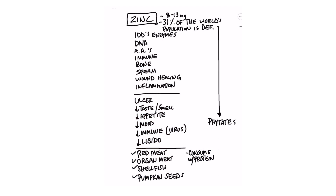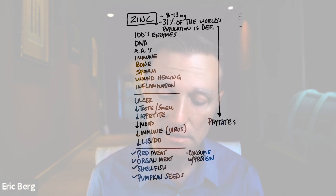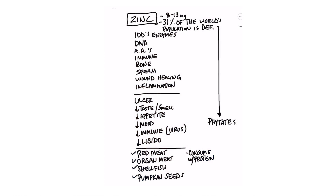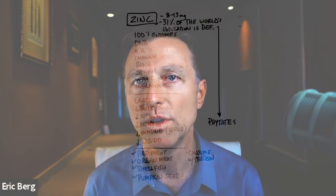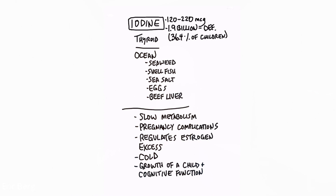Zinc deficiency can also really crash your libido. The type of zinc that's easily absorbed is in red meat — this is why vegans are usually deficient. It's also in organ meats and shellfish. Shellfish has pretty much all the trace minerals because it's from the ocean. Pumpkin seeds also have a good amount of zinc. As a side note, when you consume zinc with protein, you're going to get more absorption.